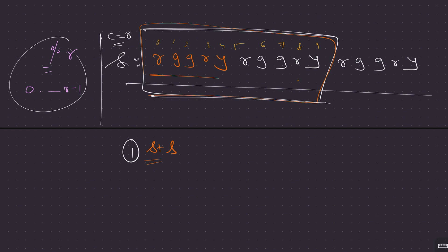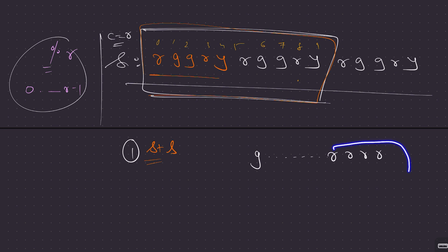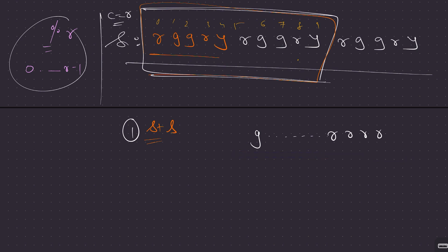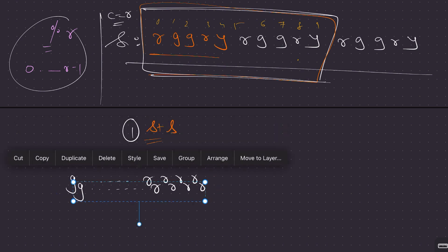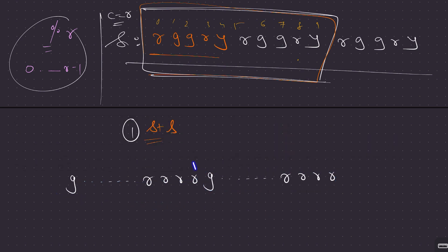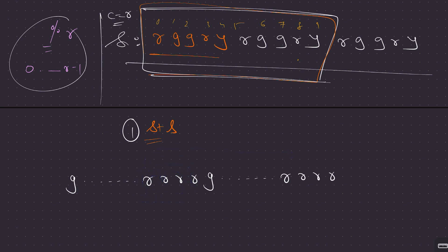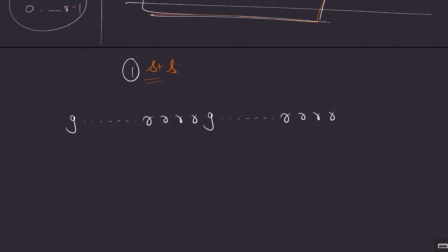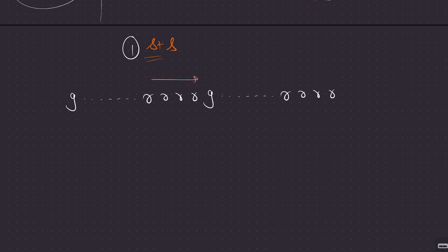Even after appending s+s, if we scan forward from every occurrence of c, the problem isn't fully resolved. In a case like 'g yyy...rrr...', you still have O(n) occurrences of red that each require O(n) scanning forward, giving O(n²). So while working on s+s is a useful simplification, we still need to optimize the distance computation itself.